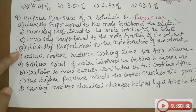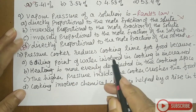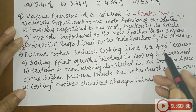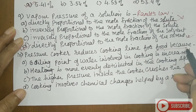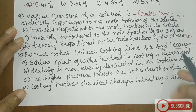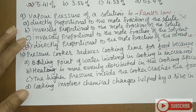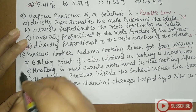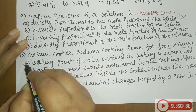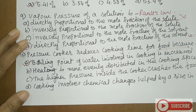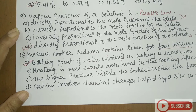Pressure cooker reduces cooking time because the boiling point of water inside the pressure cooker is increased, so the food gets cooked faster.